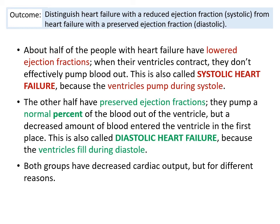This is called systolic heart failure because the ventricles pump during systole. The other half of people with heart failure have a preserved ejection fraction — they pump a normal percentage of blood out of the ventricle, but a decreased amount of blood enters the ventricle in the first place. This is called diastolic heart failure because the ventricles fill during diastole.